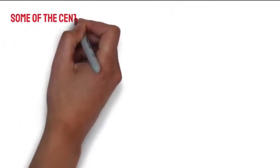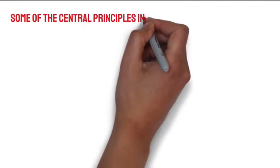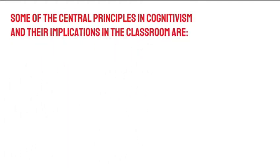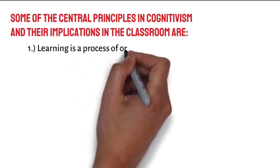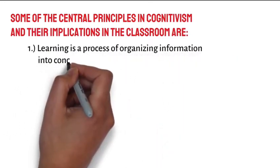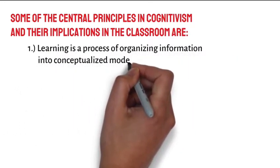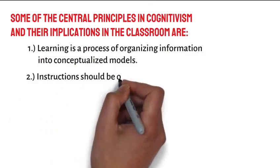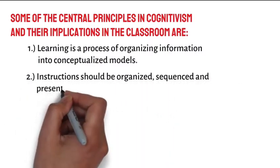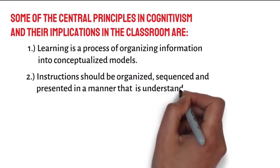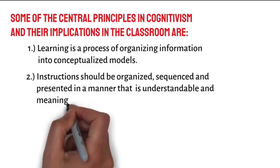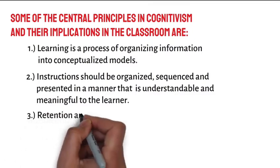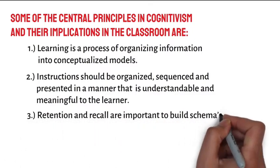Some of the central principles in Cognitivism and their implications in the classroom are: 1. Learning is a process of organising information into conceptualised models. 2. Instructions should be organised, sequenced and presented in a manner that is understandable and meaningful to the learner. 3. Retention and recall are important to build schemas in the brain.